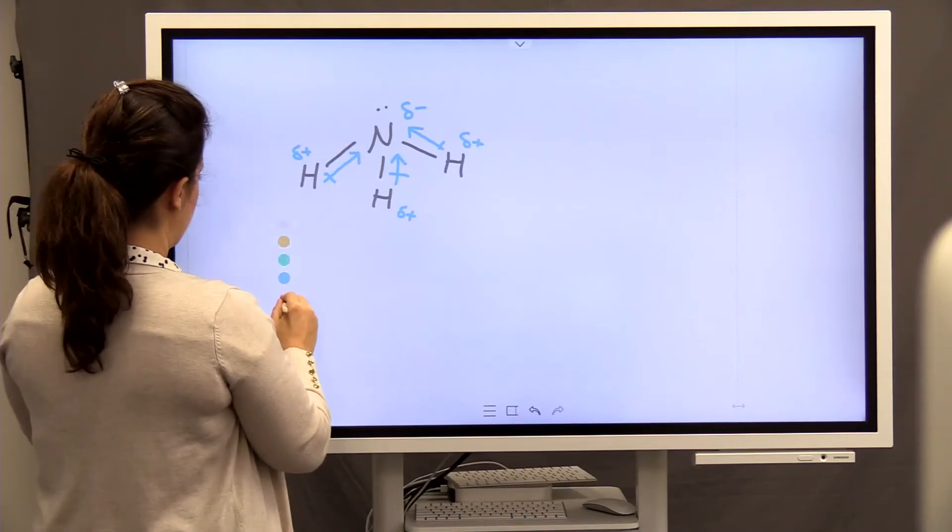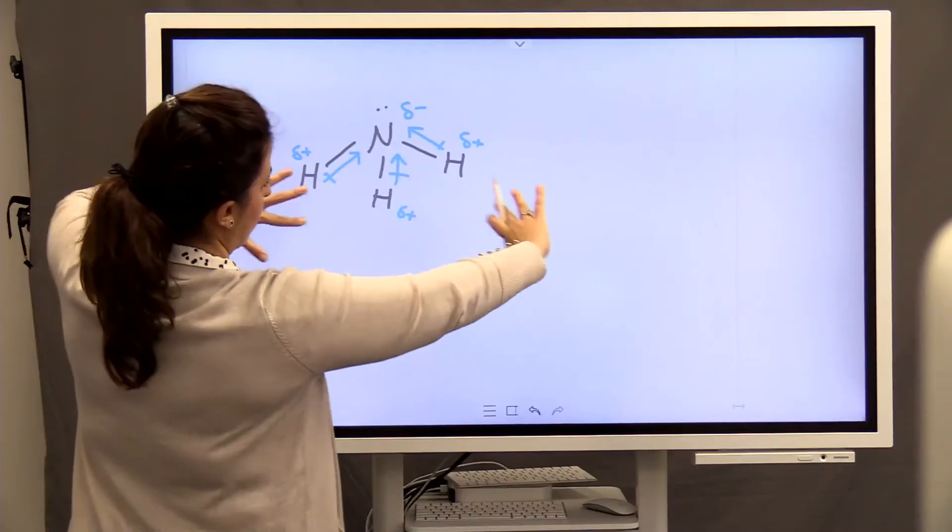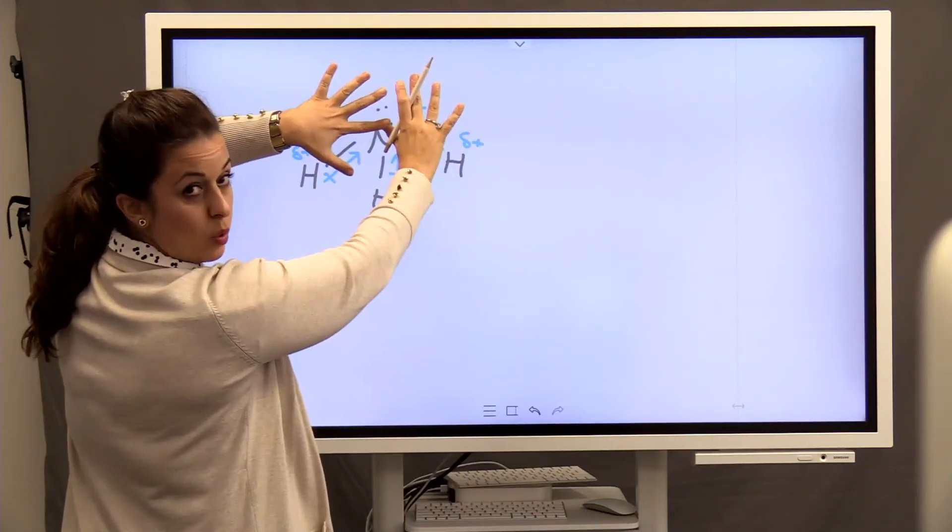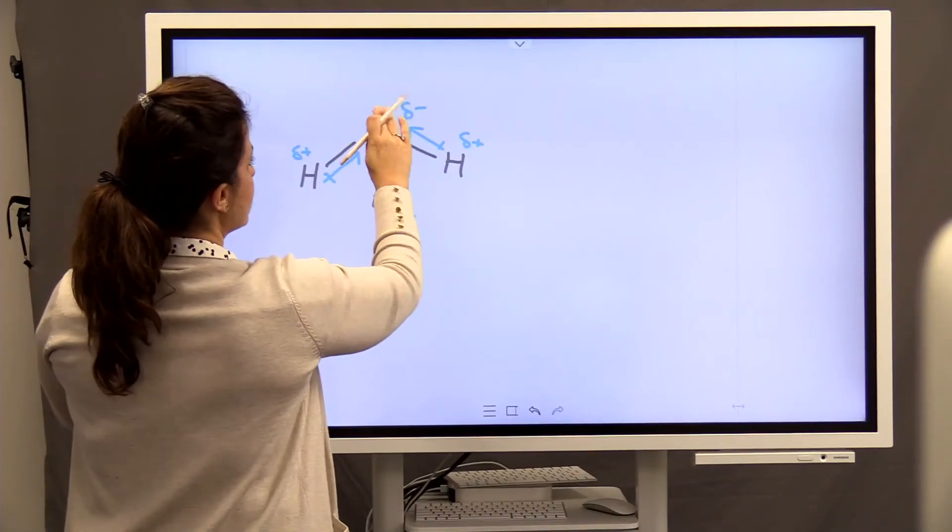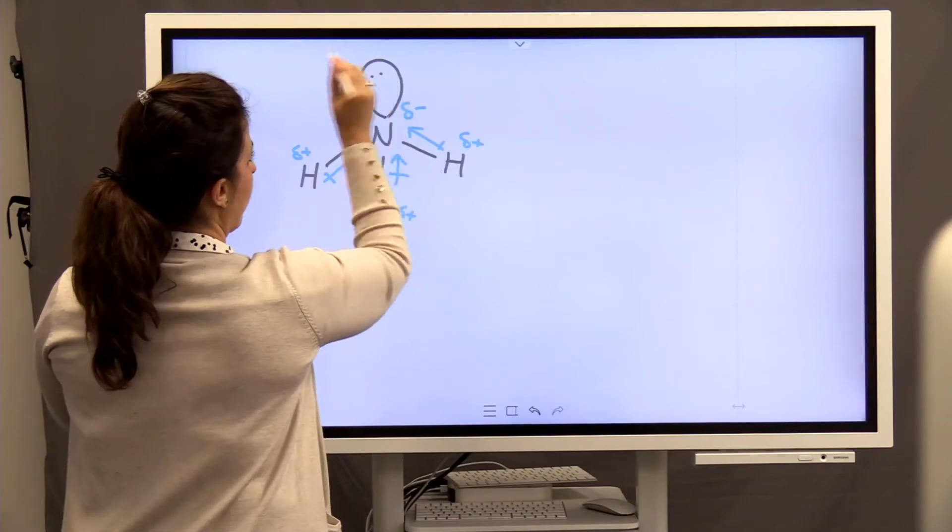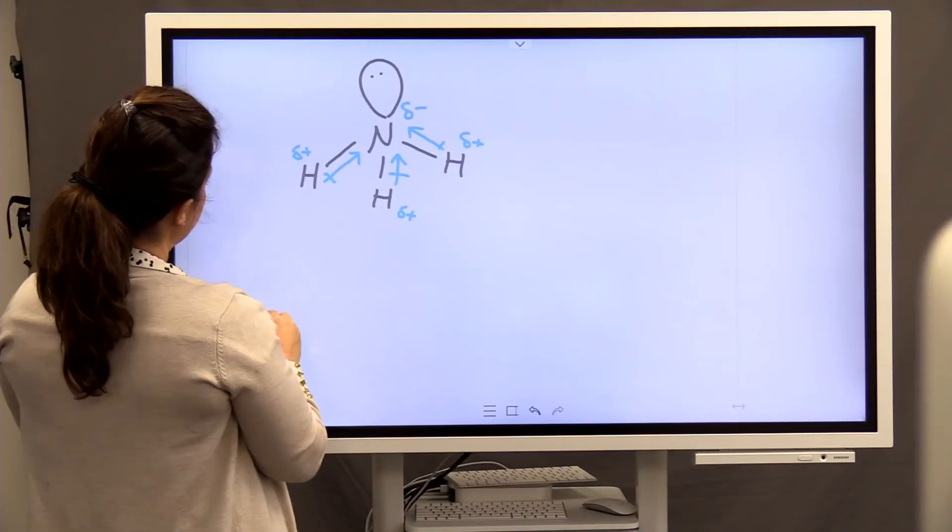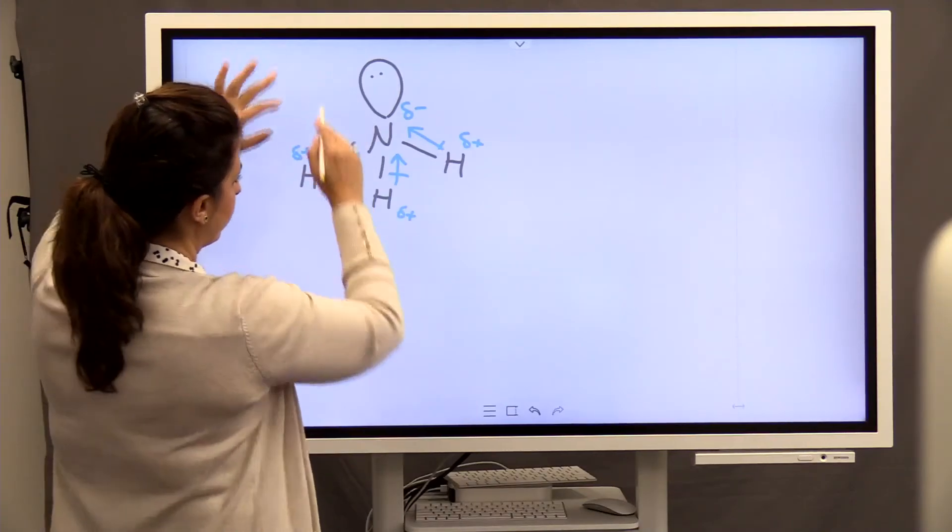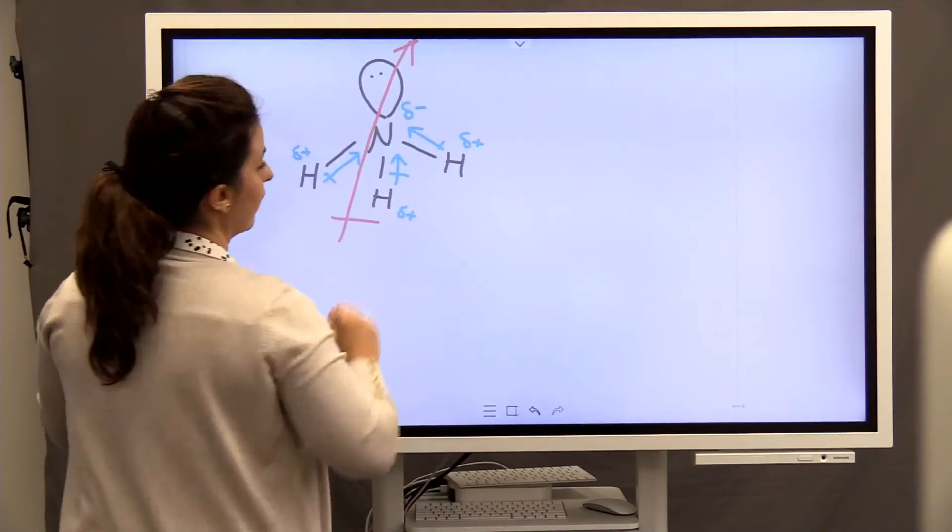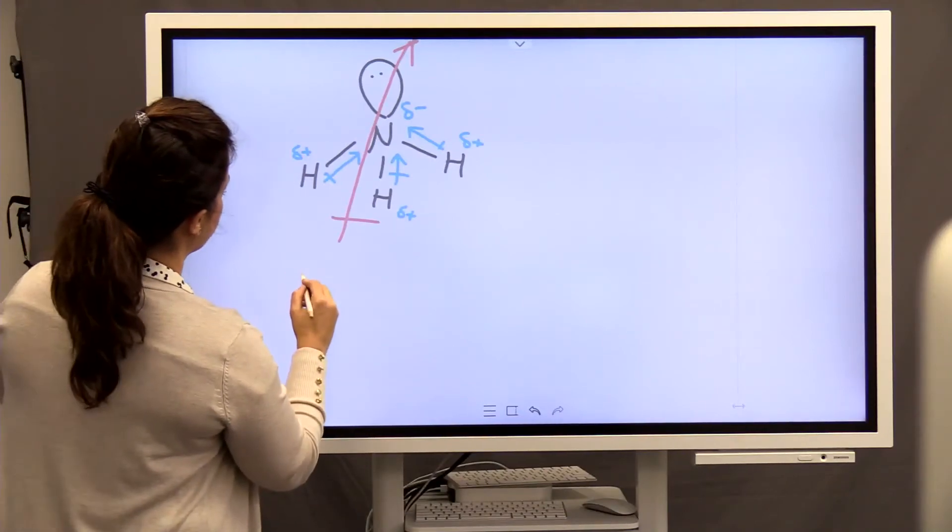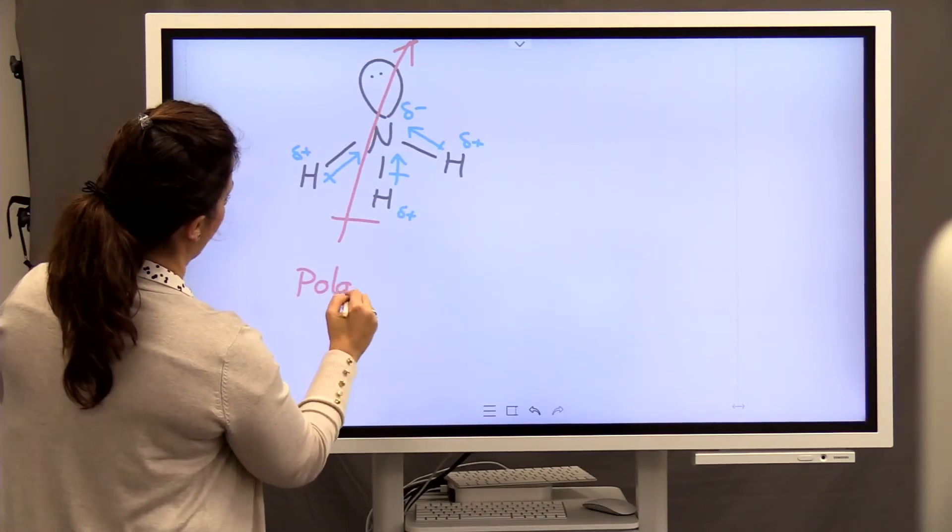And also, you see, it seems like the flow of electrons is all towards nitrogen. And also, this non-bonding pair is a big pair, right? It's a big density of electrons. So it seems like all the electron flow is towards the top of the molecule. So the molecule is polar.